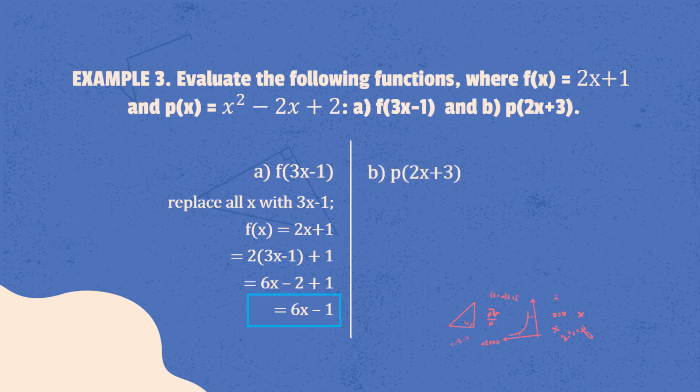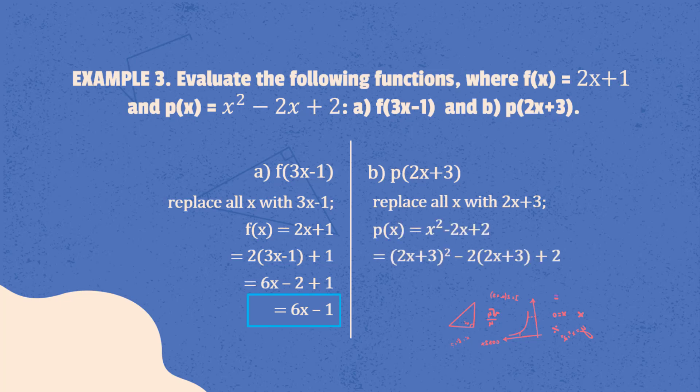For question b, replace all x with 2x plus 3 in p of x. Review squaring a binomial: square the first term, twice the product of the two terms, and square the last term. Multiply 2 to 2x plus 3, and don't forget to distribute the negative sign as well. We now have 4x squared plus 12x plus 9 minus 4x minus 6 plus 2. Adding like terms, the final answer is 4x squared plus 8x plus 5.